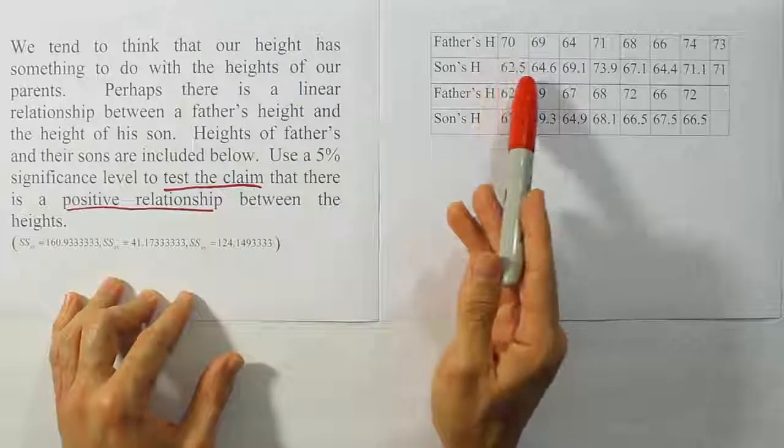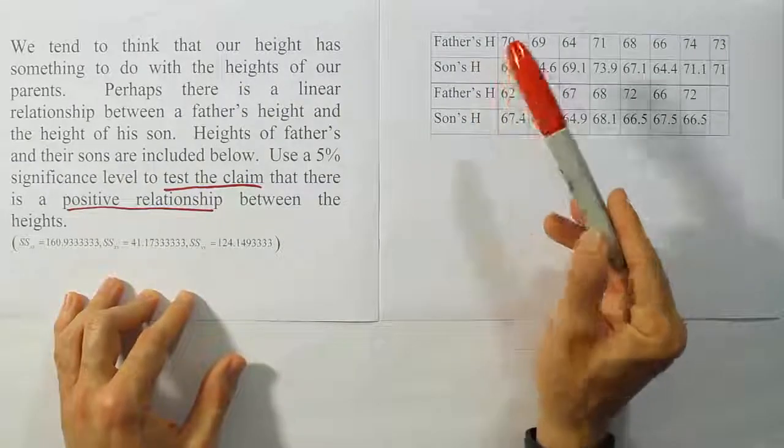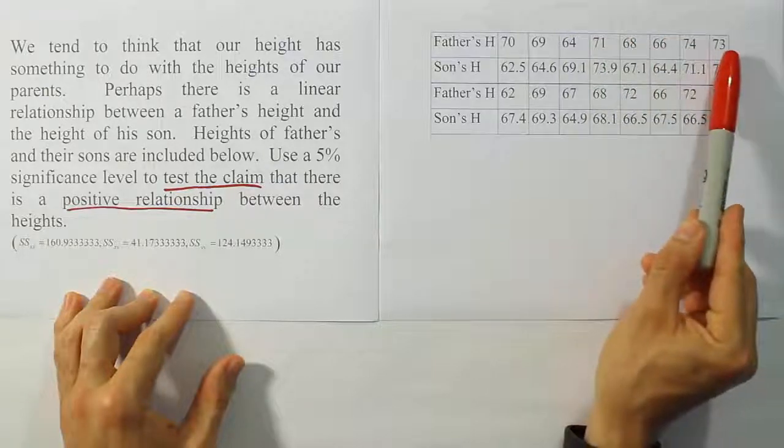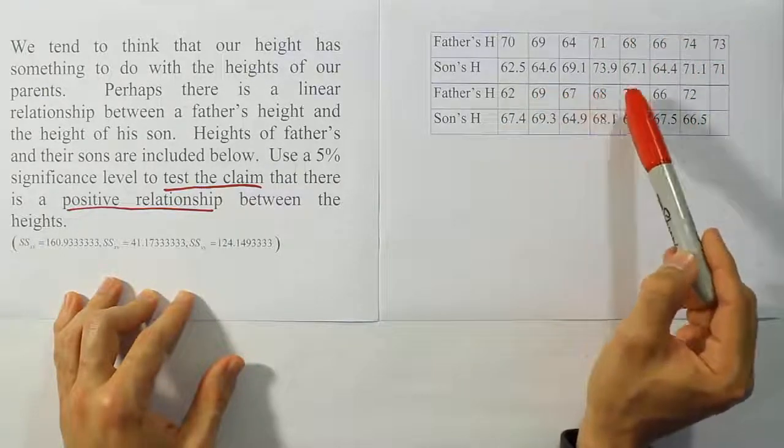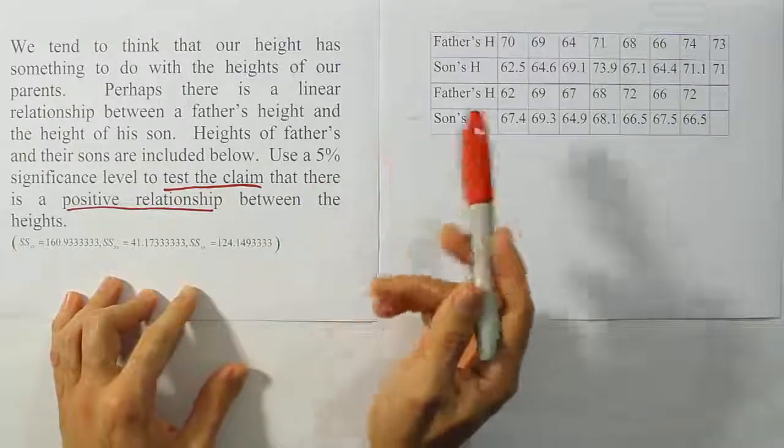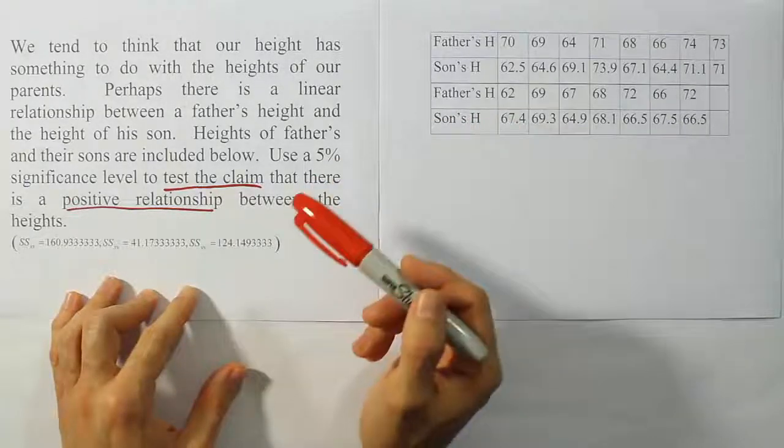Alright, so we have a list of father and son's heights. We have ordered pairs there. If you count, we have 1, 2, 3, 4, 5, 6, 7, 8, 9, 10, 11, 12, 13, 14, 15. So the n in this problem is 15. We have to remember that for later. We're going to need that number.